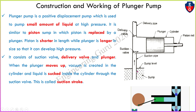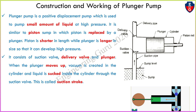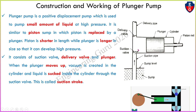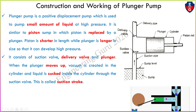Now understand the working of the plunger pump. It consists of a delivery valve. When the plunger moves in the forward direction, or we can say moves up, a vacuum is created inside the cylinder. The suction valve will open and water enters into the cylinder. When vacuum is created, the liquid is sucked inside the cylinder through the suction valve. This is called the suction stroke.